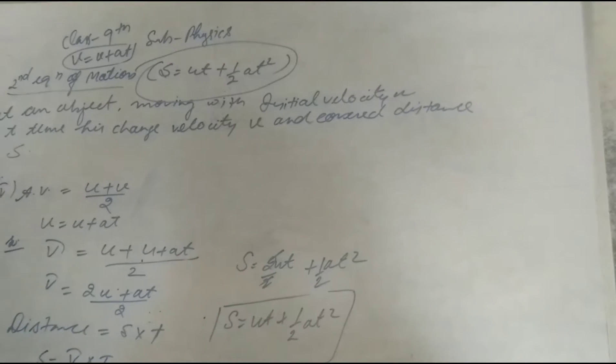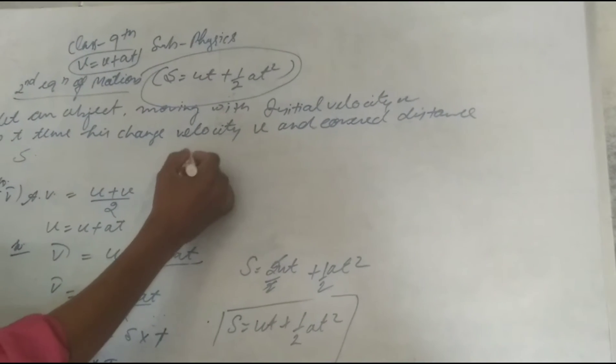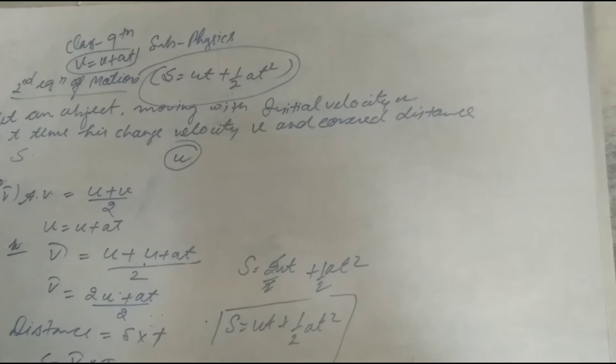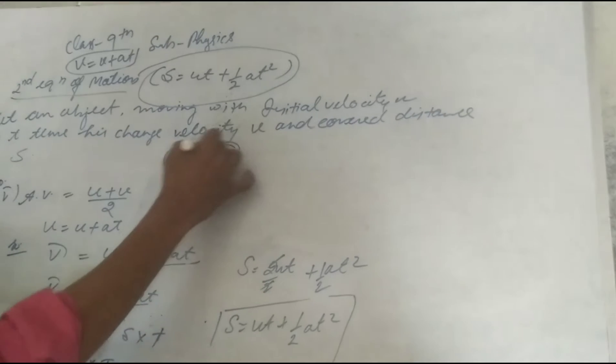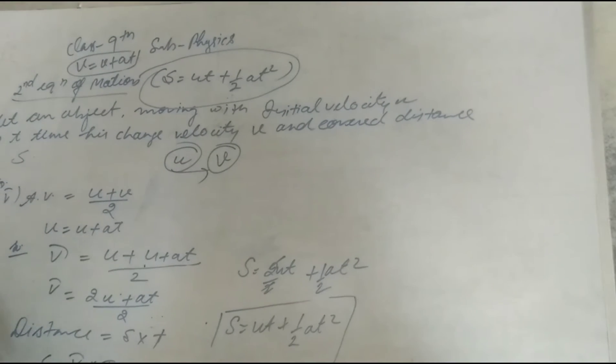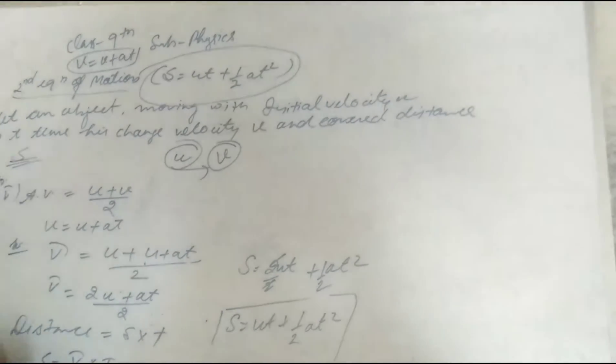So let an object moving with initial velocity u, moving with initial velocity u in t time, his change velocity into v. The velocity change u to v in t time and cover distance s.